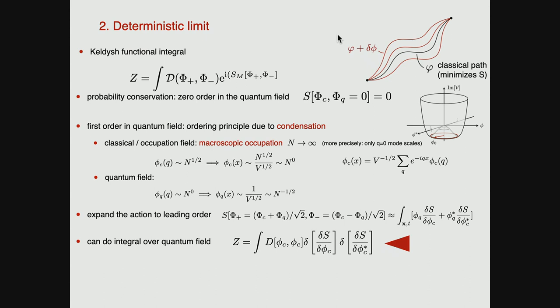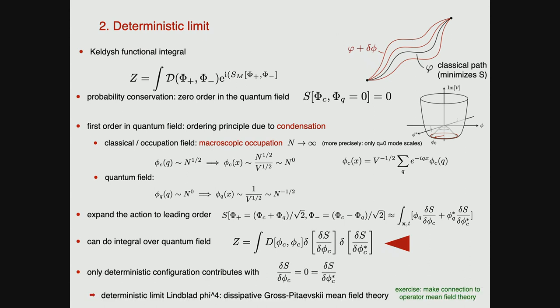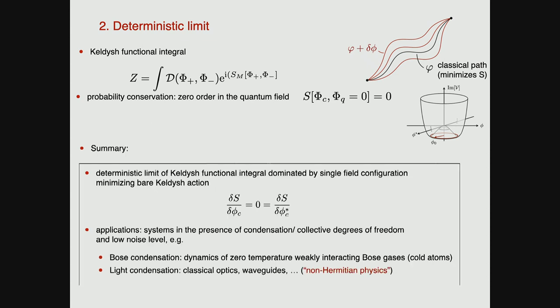We appreciate now this deterministic limit and have shown technically that there is a classical action principle giving us a dominant configuration when we assume physically that there is a condensation phenomenon. From a completely different perspective yesterday, we got the exact same result for a specific theory — this workhorse Lindblad φ⁴ theory — where we did heavy approximations including factorization of the density matrix in space and mean field theory.